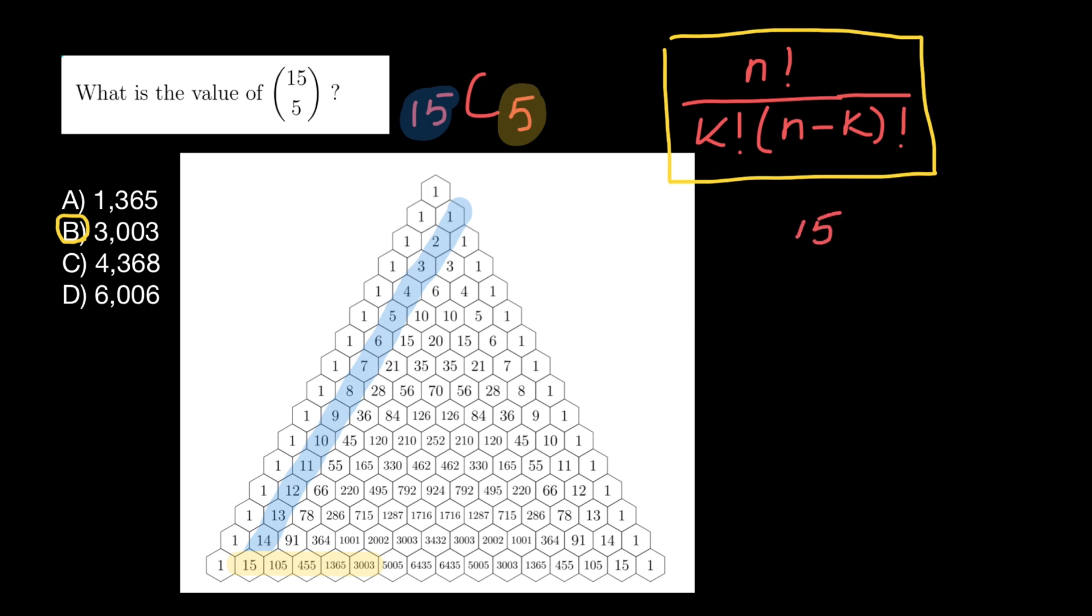So 15 factorial divided by 5 factorial, 15 minus 5 factorial, which would equal to 15 factorial divided by 5 factorial and 10 factorial.